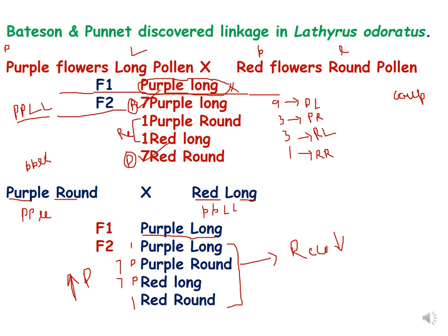Bateson and Punnett discovered linkage in Lathyrus odoratus. They crossed a purple-flowered plant with long pollen with a red-flowered plant with round pollen. Purple is dominant over red and long pollen is dominant over round pollen. In F1 they got purple and long flowered plants as expected, but in F2 they expected a 9:3:3:1 ratio. However, the results were different — they got more parental type combinations than recombinants, obtaining a 7:7:1:1 ratio.